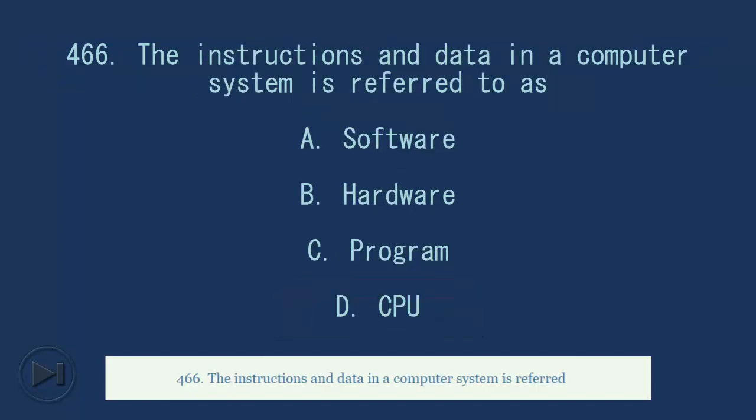466. The instructions and data in a computer system is referred to as A. Software. B. Hardware. C. Program. D. CPU. Answer, A. Software.